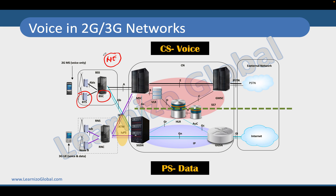Purpose-built hardware means they were specifically designed for a certain network function. In the case of 2G and 3G networks, our network had two types of core network: circuit switching core network, which was primarily designed for voice, and packet switching core network, which is primarily designed for data.